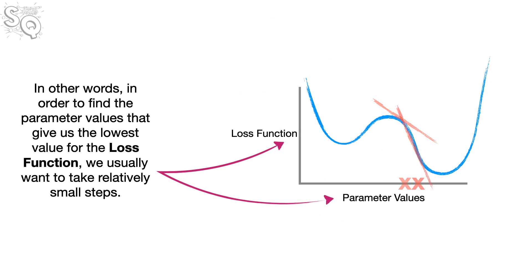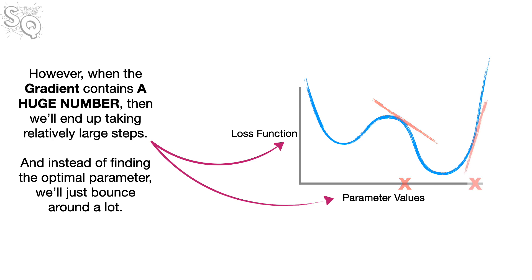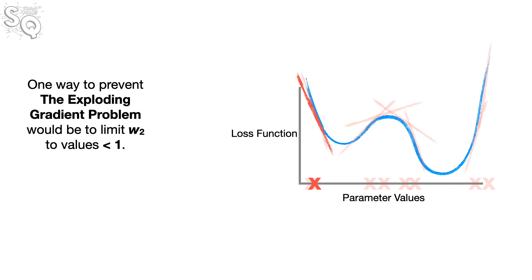In other words, in order to find the parameter values that give us the lowest value for the loss function, we usually want to take relatively small steps. Bam! However, when the gradient contains a huge number, then we'll end up taking relatively large steps. And instead of finding the optimal parameter, we'll just bounce around a lot. Wah-wah!